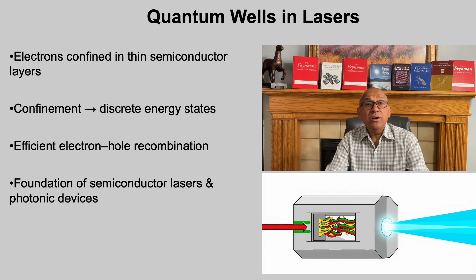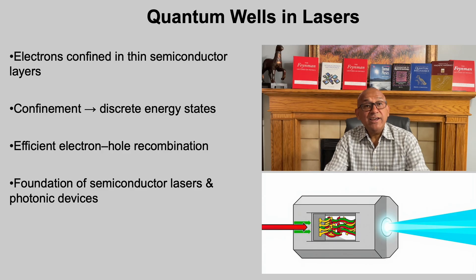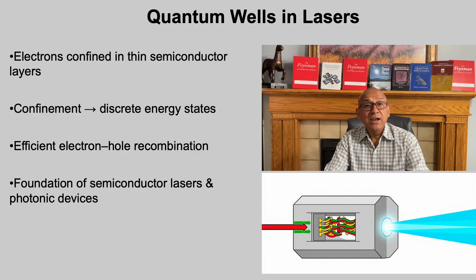Another striking example of quantum confinement in action is the quantum well. In these structures, electrons and holes are confined in a very thin semiconductor layer only a few nanometers thick. This confinement forces their energy states to become discrete in the growth direction, while still allowing free motion in the plane. The result is highly controlled electron-hole recombination, and that efficiency is exactly what makes semiconductor lasers work. Quantum wells are the foundation of the tiny laser diodes we see in DVD players, barcode scanners, fiber optic communication systems, and many photonic devices that power modern technology.